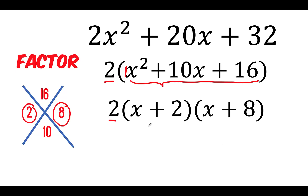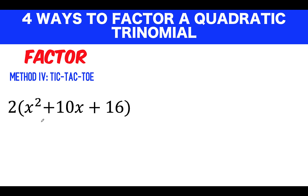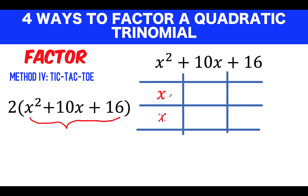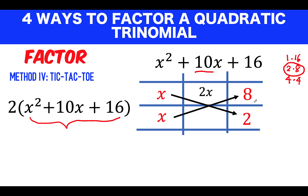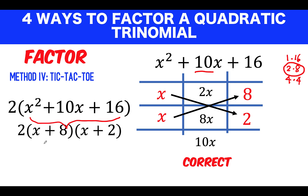For method 4, the tic-tac-toe method, apply it only to the trinomial inside the parentheses: x² + 10x + 16. Factors of x² are x and x. Factors of 16 that add to 10 are 2 and 8. So placing 8 and 2: x × 2 = 2x, x × 8 = 8x, and 2x + 8x = 10x — correct. Therefore x² + 10x + 16 = (x + 8)(x + 2), and don't forget the 2 factored out earlier. Final answer: 2(x + 2)(x + 8).